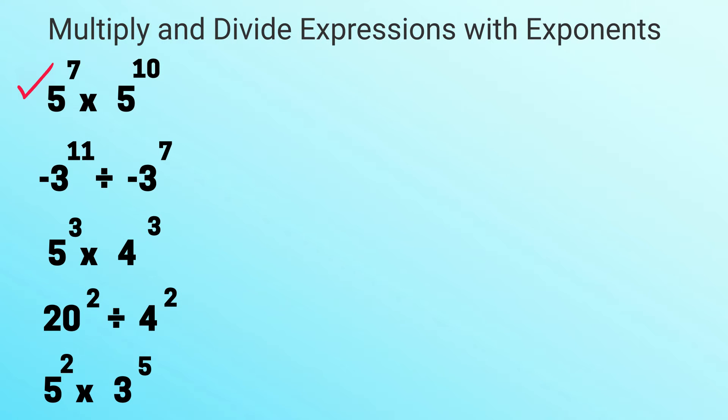Okay, this first example we have 5 to the 7th times 5 to the 10th. We have the same basis, so what you do is you keep the base and then you add the exponents. So the base will be 5, 7 plus 10 is 17, so it would be 5 raised to the 17th power.